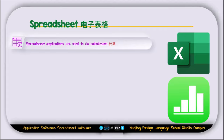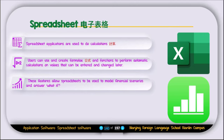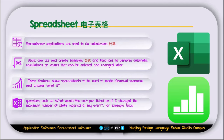The next application software is called the spreadsheet. Spreadsheet applications are used to do calculations — the basic purpose is to perform calculations on data. Users can create formulas and functions to perform automatic calculations on values that can be entered and changed later. These features allow spreadsheets to be used to model financial scenarios and answer what-if type questions, such as: what would the cost per ticket be if I change the maximum number of staff required for my event? Examples of spreadsheet software are Microsoft Excel and Numbers.